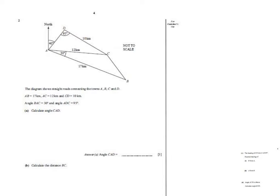Part A asks us to calculate angle CAD. I'll call it theta. It's not a right-angle triangle, so I can't use ordinary trigonometry. But I know the opposite side and I have a full 'team' — an angle and its opposite side — so I can use the sine rule. The sine of theta over its corresponding length of 10 equals the sine of 95° over 12.